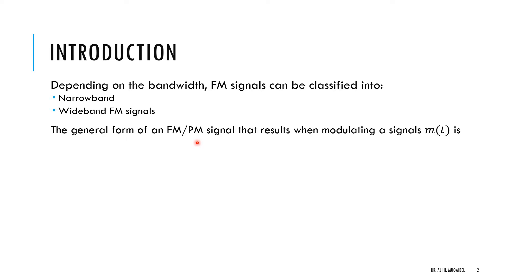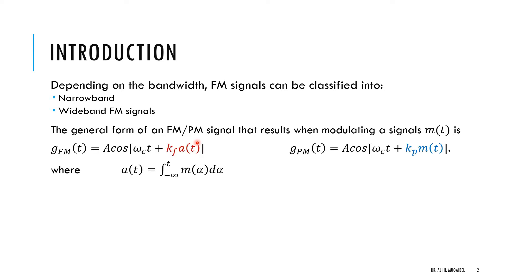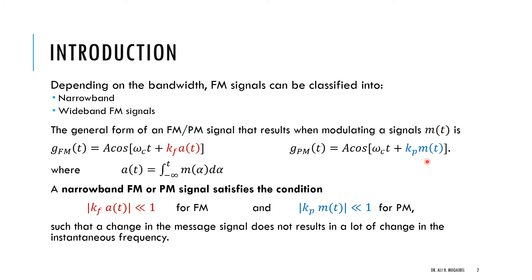The general form for the FM or PM signal is given by two equations. On the left hand side we have the general form for the FM signal and on the right hand side the general form for the phase modulated signal. In PM the phase is directly proportional to the message, while in FM the phase is related to the integral of the message a(t), meaning the instantaneous frequency depends on the message itself.